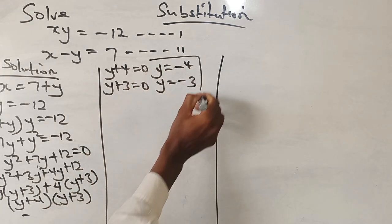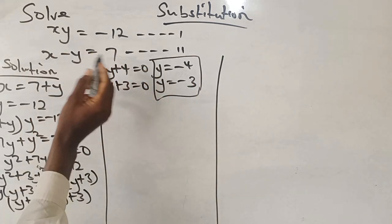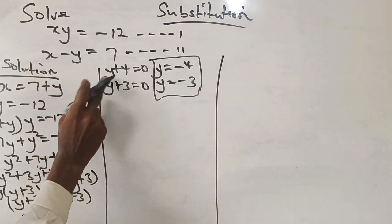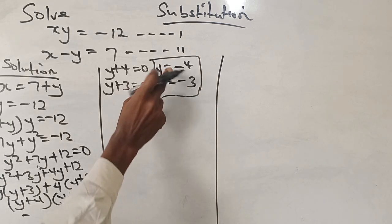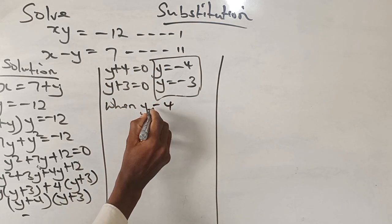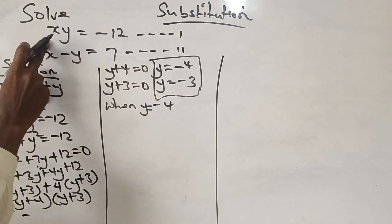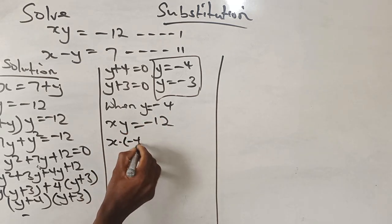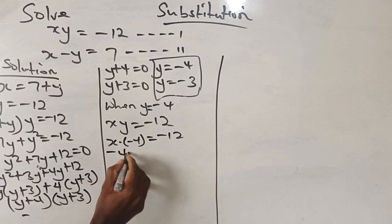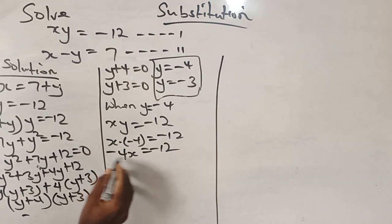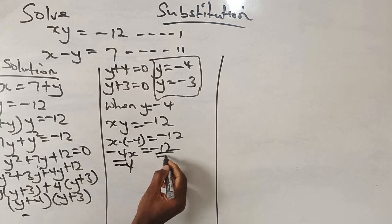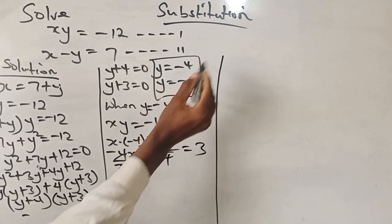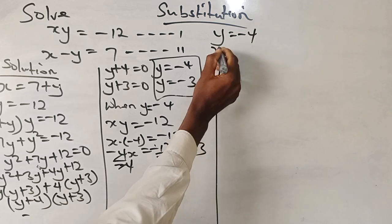Now let us use these two values of y to determine x. Using equation 1 when y equals minus 4: x times minus 4 equals minus 12, which gives minus 4x equals minus 12. Dividing both sides by minus 4, we get x equals 3. So when y equals minus 4, x is 3. That is case 1.